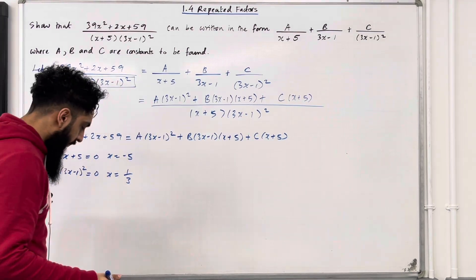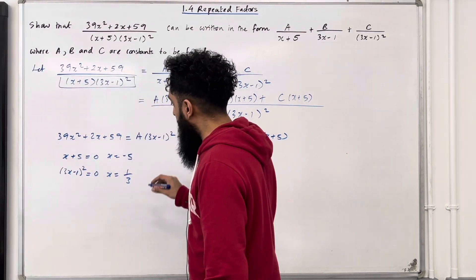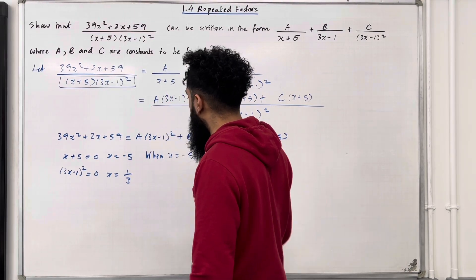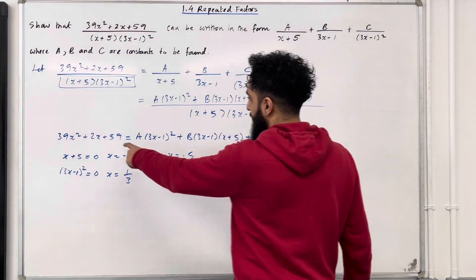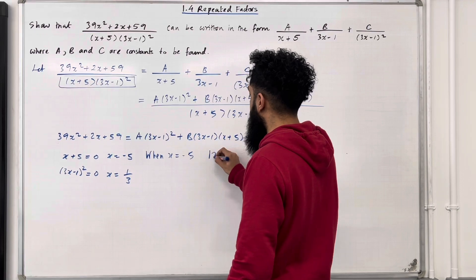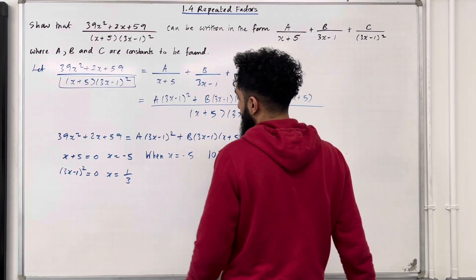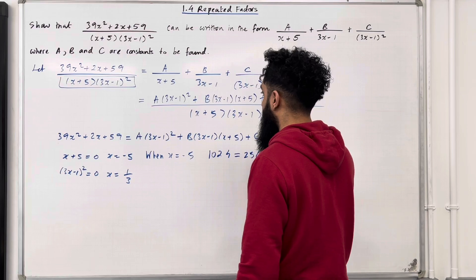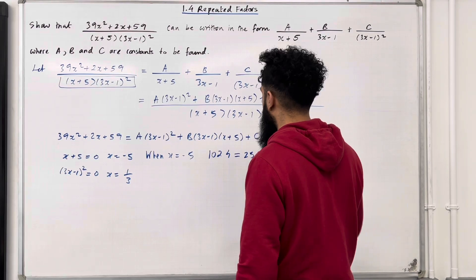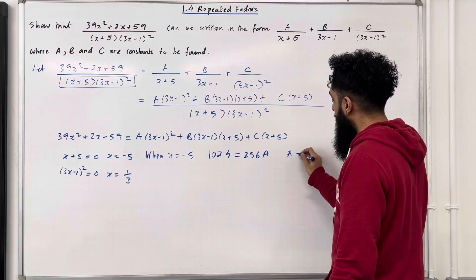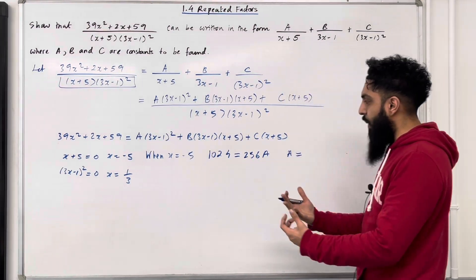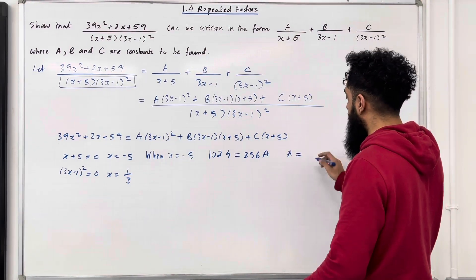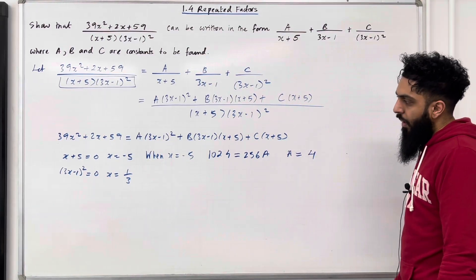Starting with x = −5: substituting into the left-hand side gives 1024, and into the right-hand side gives 256A. Hence A = 1024 ÷ 256, which gives A = 4.